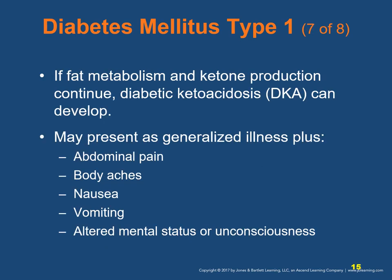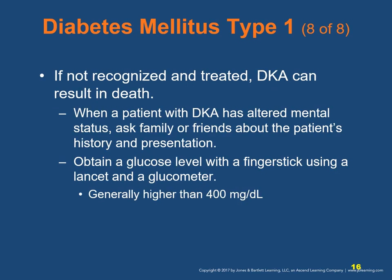If fat metabolism and ketone production continue, a life-threatening illness called diabetic ketoacidosis (DKA) can develop. DKA may present as generalized illness along with abdominal pain, body aches, nausea, vomiting, and altered mental status or unconsciousness if severe. If not rapidly recognized and treated, DKA can result in death.